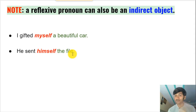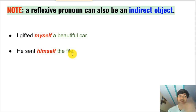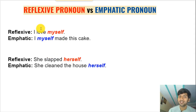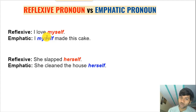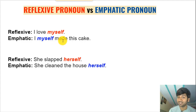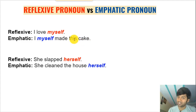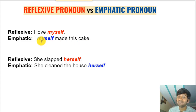One more important point: all these pronouns — myself, yourself, himself, herself, itself, ourselves, yourselves, themselves — also work as emphatic pronouns. An emphatic pronoun emphasizes something in a sentence, and you can remove it without changing the core meaning. To find out whether a word like 'myself' is a reflexive pronoun or an emphatic pronoun, check whether it is working as an object.